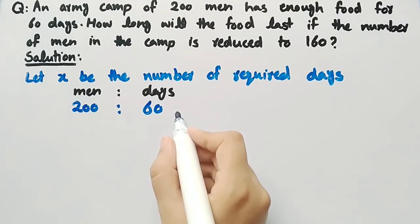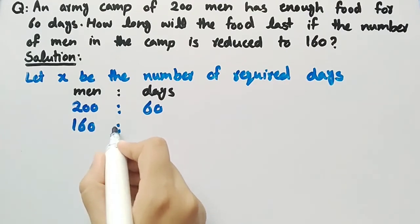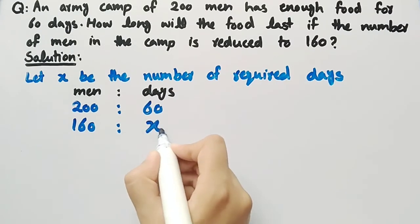Now we have to find how long will the food last if the number of men in the camp is reduced to 160. And we have to find the number of days. Let X be the number of required days.